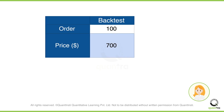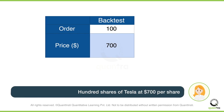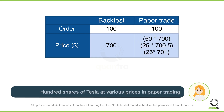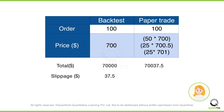For example, in backtesting, you could place an order of 100 shares of Tesla at $700, and it is assumed as filled. But in paper trading, only 50 shares were bought at $700, 25 shares were bought at $700.50, and the rest were filled at $701. In this manner, paper trading helps you understand the impact of slippage.